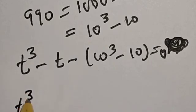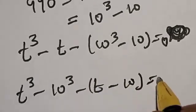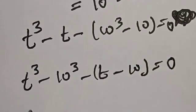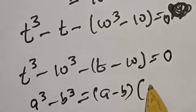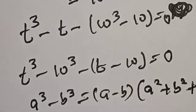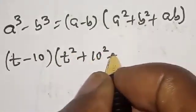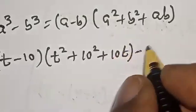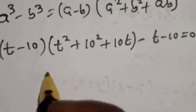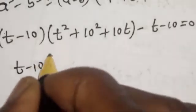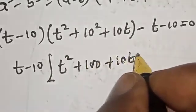Comparing: t³ - 10³ - t + 10 = 0. Using the difference of cubes rule, a³ - b³ = (a-b)(a² + b² + ab), we get: (t-10)(t² + 100 + 10t) - (t - 10) = 0. Since (t-10) is common, we factor it out: (t-10)(t² + 10t + 99) = 0.